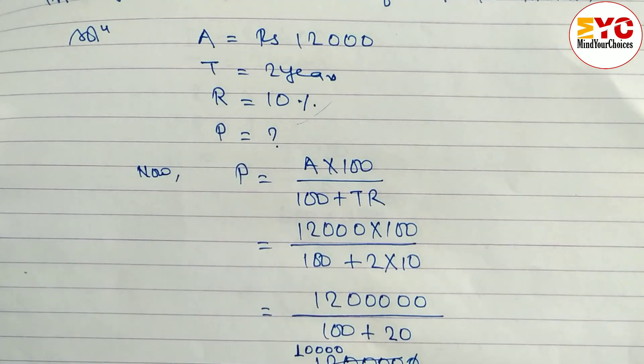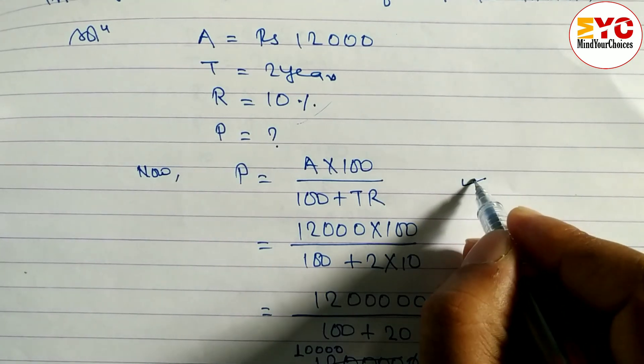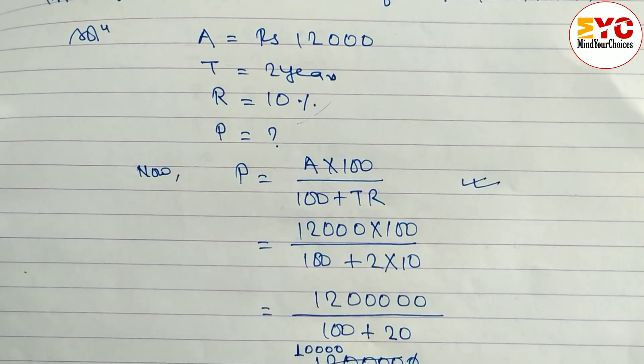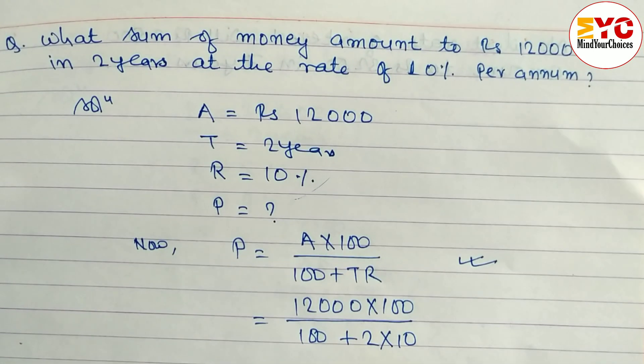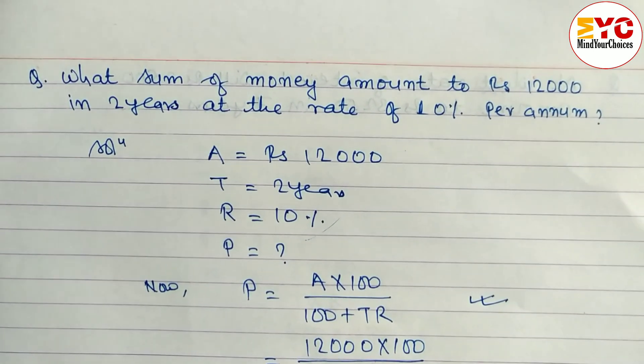And time two years, rate 10 percent. Here we have to learn the formula. Main important is formula. So you have to learn the formula of principle: P = A into 100 by 100 plus TR.